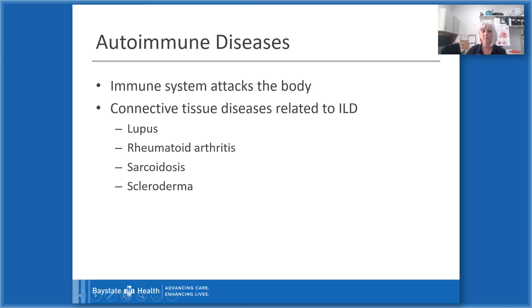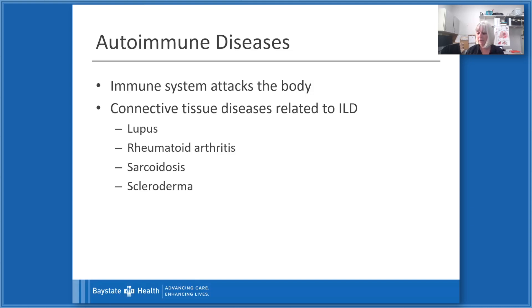Sarcoidosis is a collection of inflammatory cells in different parts of the body; it can lead to enlarged lymph nodes, kidney stones, and granulomas — which are basically masses of scar tissue — that can be present in the lungs. Scleroderma is a hardening of the skin and connective tissue; it can be localized or happen throughout the body. If it occurs in the connective tissue of the lungs, it is considered one of the interstitial lung diseases.